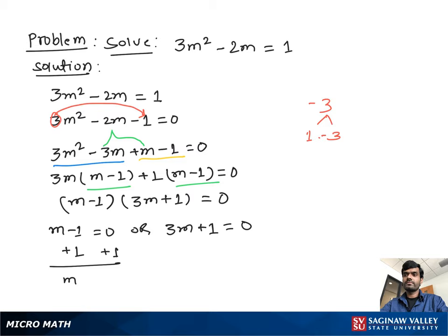If we subtract 1 from both sides we get 3m equal to negative 1. Then we divide both sides by 3 and we get m equal to negative 1 third.